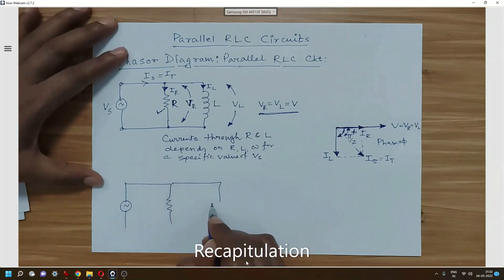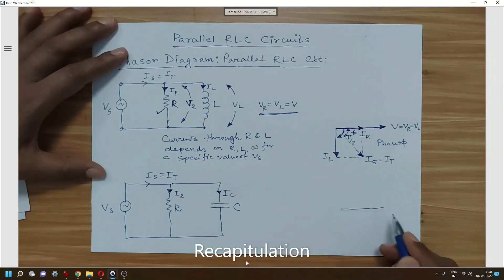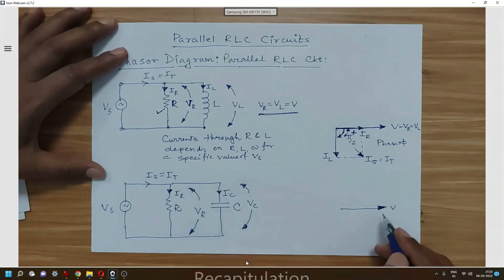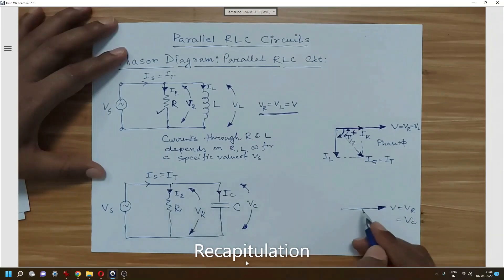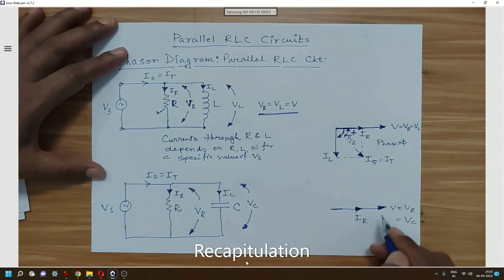For the RC parallel circuit, we again draw the voltage as the reference. This V = VR = VC. For the resistive circuit, since current and voltage always remain in the same phase, we will draw IR in the same direction as VR.